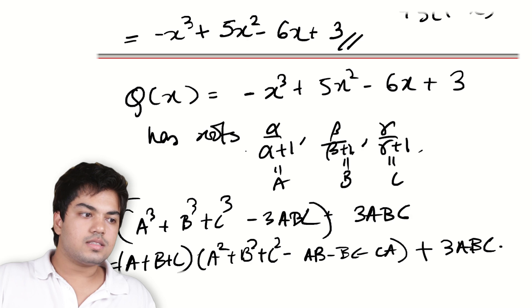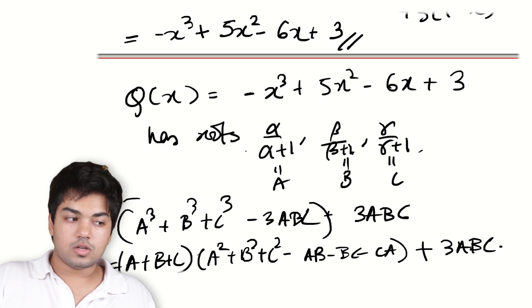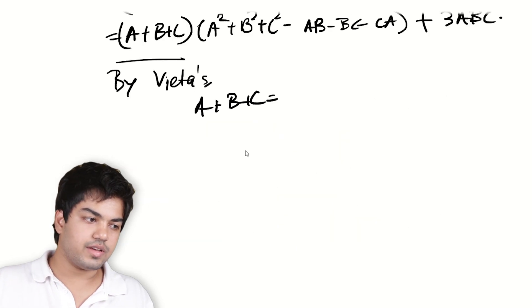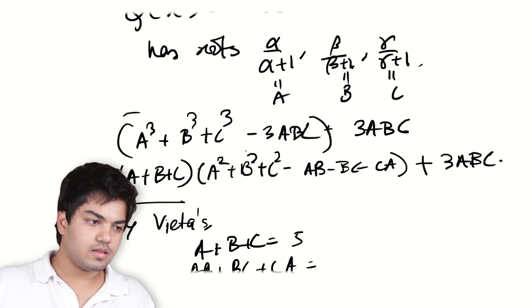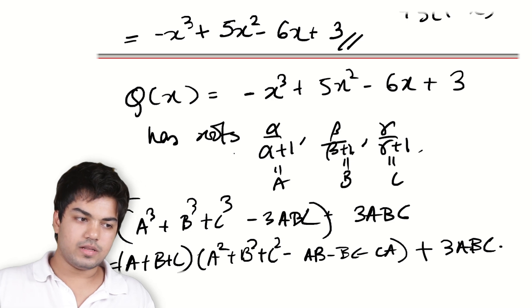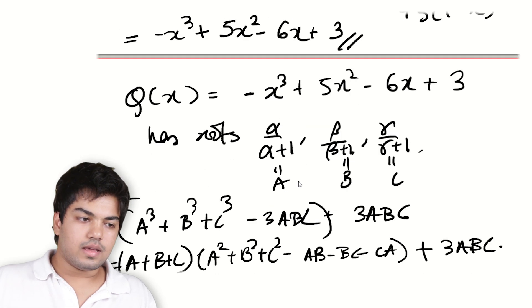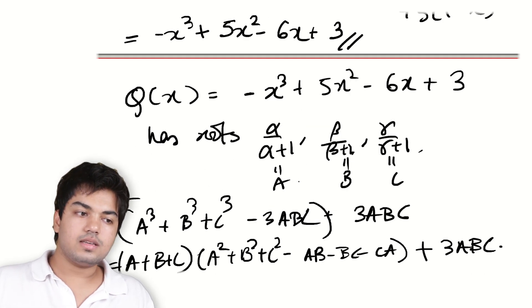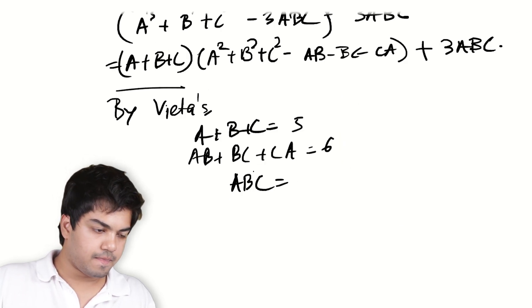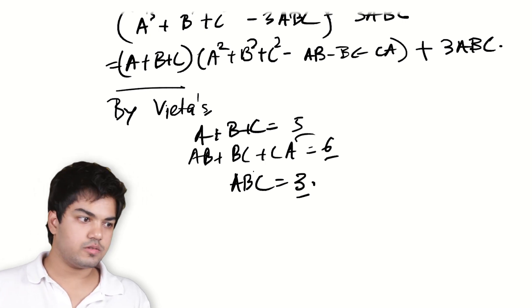It's -5 by the coefficient of x² which is -1. So it's 5. Similarly, AB + BC + CA is -6 by -1 which is 6, and ABC is equal to -3 by -1 which is 3. So 5, 6 and 3. All nice positive integers.